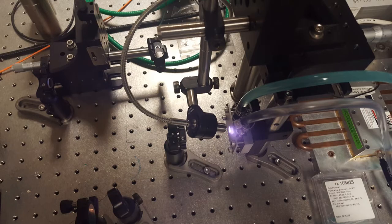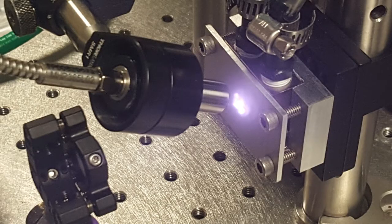To set up the cavity, a HeNe laser reflected back on itself off the chip to achieve perpendicularity with the chip, at which point the mirror was inserted at a distance dictated by the stability condition.